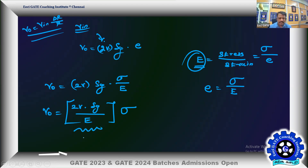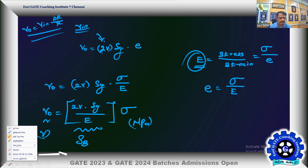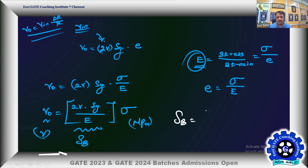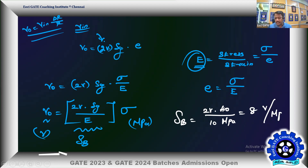The sensitivity of the bridge is V_out / stress = (2 V × gauge factor) / Young's modulus. Substituting: 2 V × 40 / 10 MPa = 80 / 10 = 8 volts per mega-pascal. This means the bridge will produce 8 volts for every mega-pascal of stress applied.